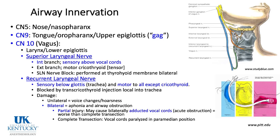The recurrent laryngeal nerve, shown in green, is sensory below the glottis. It is motor to all muscles of the larynx except the cricothyroid, which is supplied by the external branch of the superior laryngeal nerve. The recurrent laryngeal nerve can be blocked by putting a needle through the cricothyroid membrane and injecting local anesthetic into the trachea; the patient coughs and it distributes up and down.